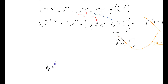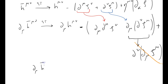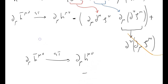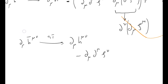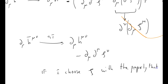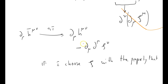So ∂_μ h̄^μν under a gauge transformation goes to ∂_μ h^μν minus ∂_μ ∂^μ ξ^ν, and the other terms have gone. What that tells me is that if I choose ξ with the property that these two terms cancel out, then ∂_μ h̄^μν minus ∂_μ ∂^μ ξ^ν equals zero.